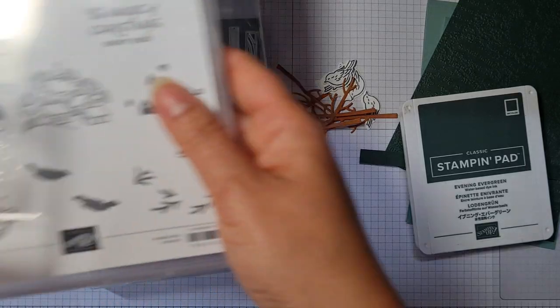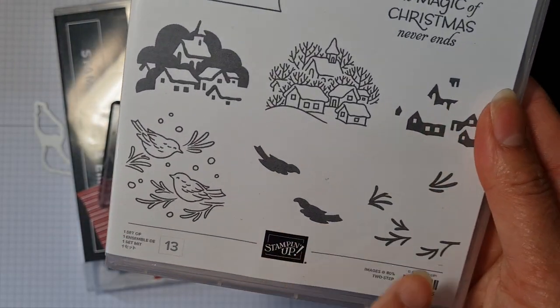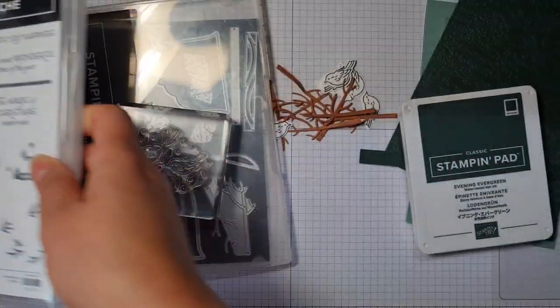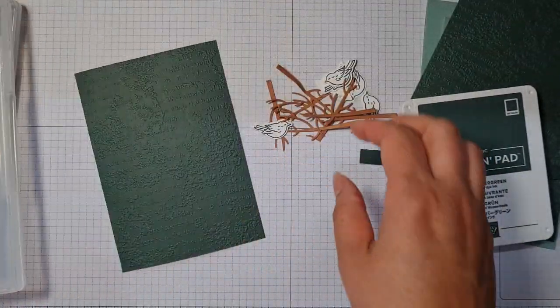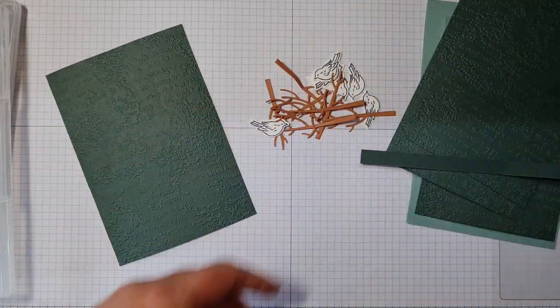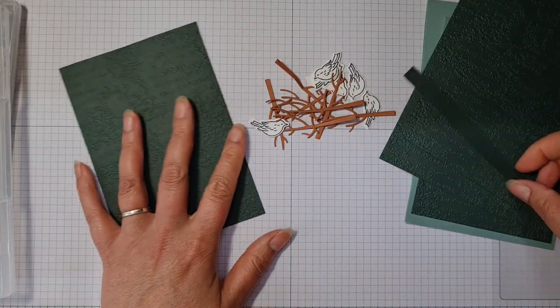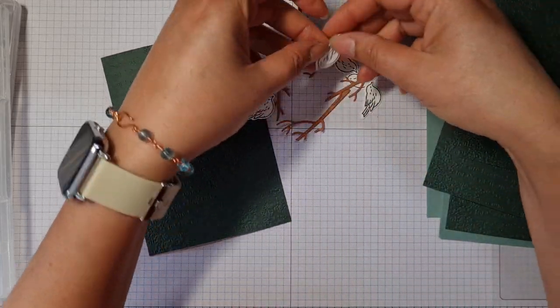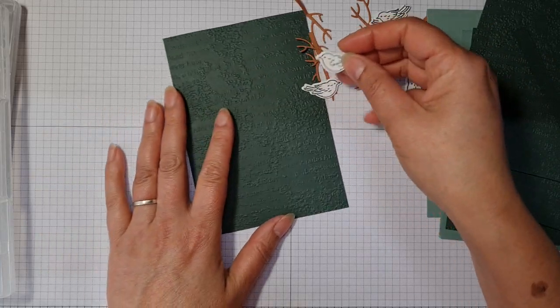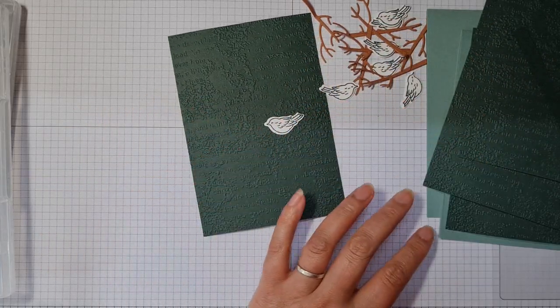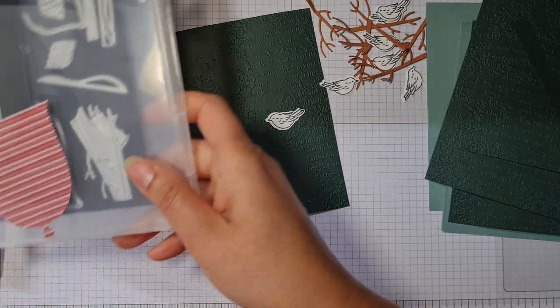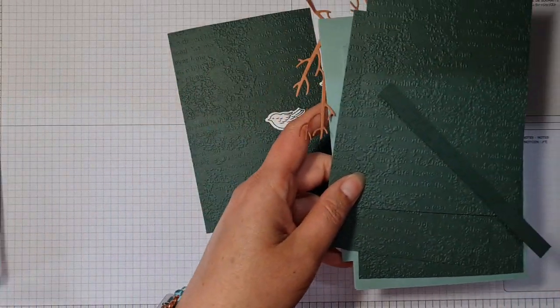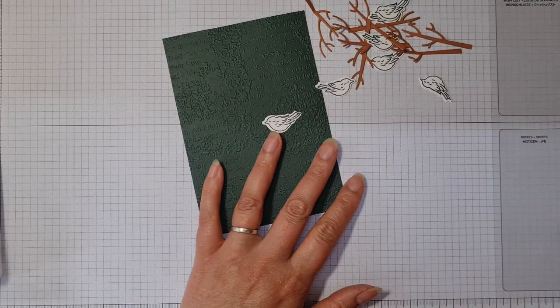Now if you wanted to colour in the birds, there are a couple of stamps that you can do that. But I'm actually going to be colouring these in myself because when I cut them out and then decided to use this lovely dark green, this is an evening evergreen background, I realised that these birds are going to look rather odd sitting on here with a white background to them. So I figured out a little way of getting around that.